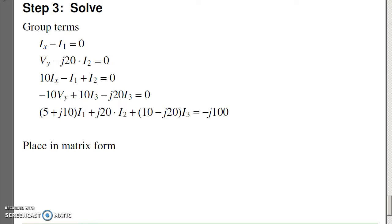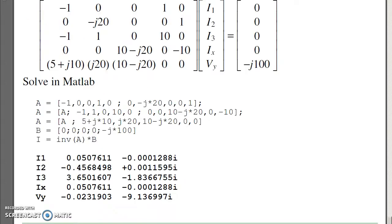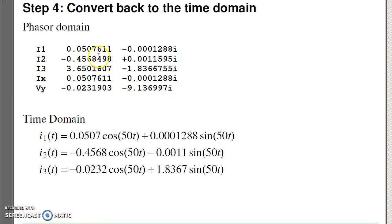To solve, group the terms, place in matrix form, throw into MATLAB, and solve. What I get are complex numbers. What the numbers mean is the real part is cosine, minus j is sine, and the frequency doesn't change. The input is at 50 radians per second. Everything else is at 50 radians per second.